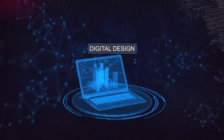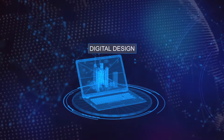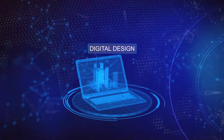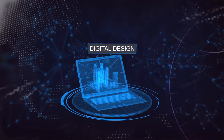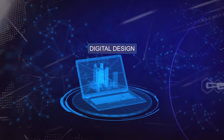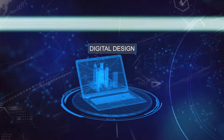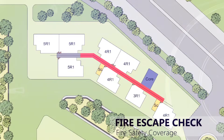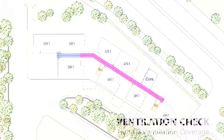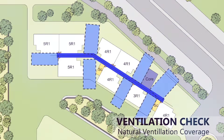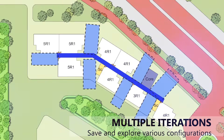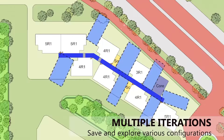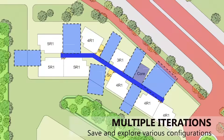Digital design involves a coordinated design to meet design objectives and downstream requirements. The architect uses a computational approach to generate different design options based on certain criteria, and a digital solution to check plans automatically.